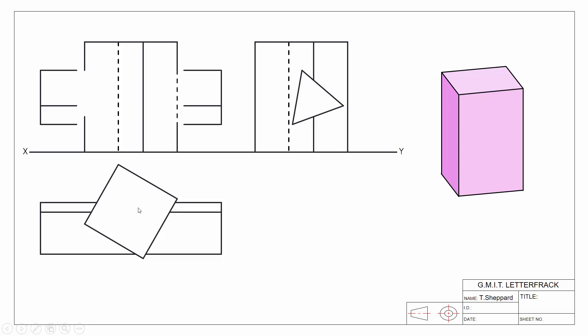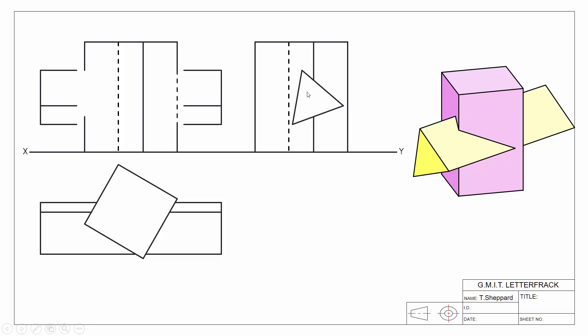This is our contour view for our square-based prism. Likewise, our second solid in this example is a triangular-based prism. We begin with our triangular contour and extrude it, giving us our second interpenetrating solid. We can see the lines of interpenetration in our front elevation, which is what we're trying to find. For the triangular-based prism, the end view is our contour view because that's where we see the contour or shape of our triangular prism.